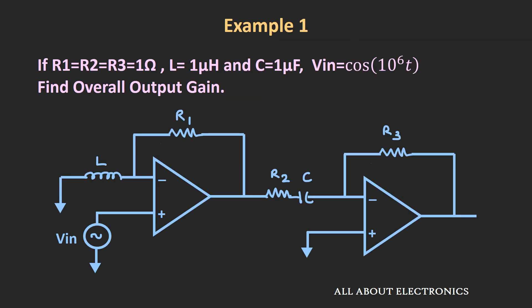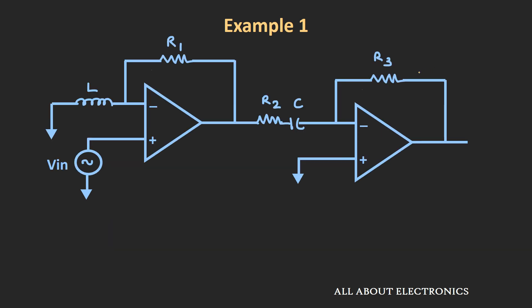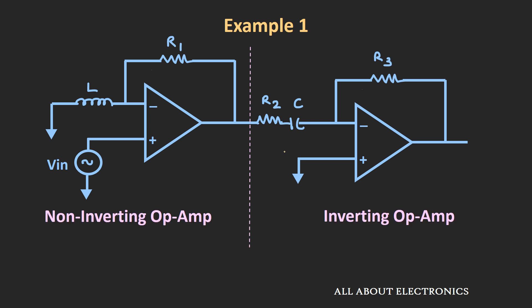Here is the first example. In this example, we have been given a particular circuit and we have been asked to find the overall output gain of this circuit. The value of R1, R2, and R3 is 1 ohm, while the value of L and C is 1 microhenry and 1 microfarad respectively. The input to this circuit is cos of 10 to the power 6. If you observe this circuit, it is the combination of non-inverting and inverting op-amp.